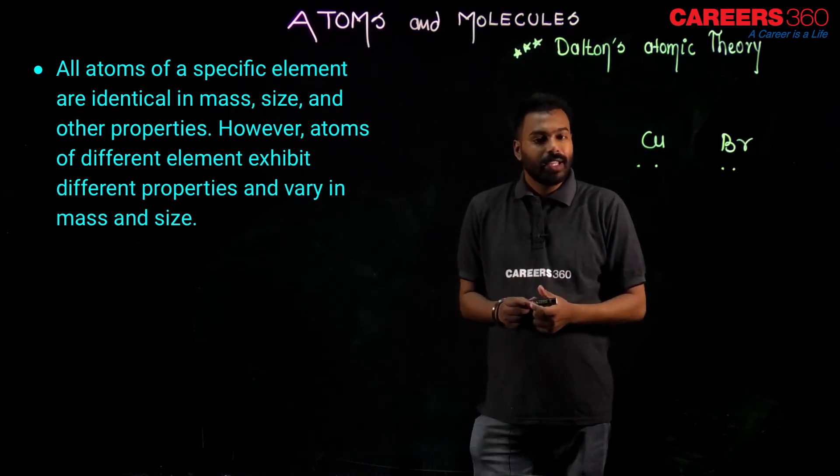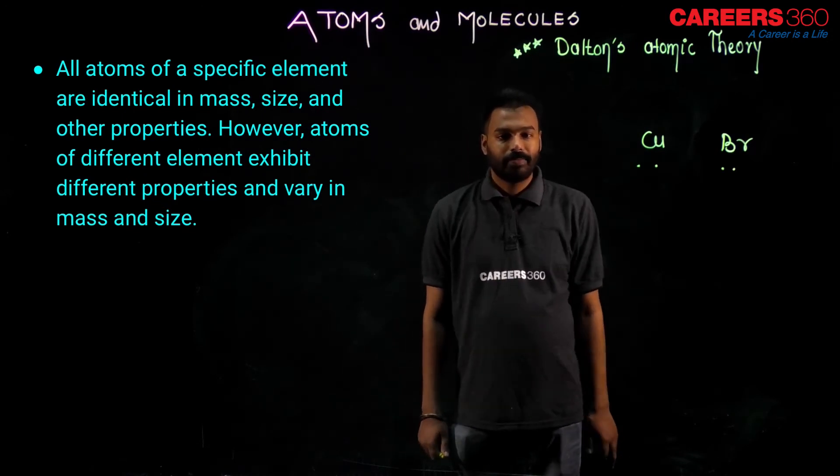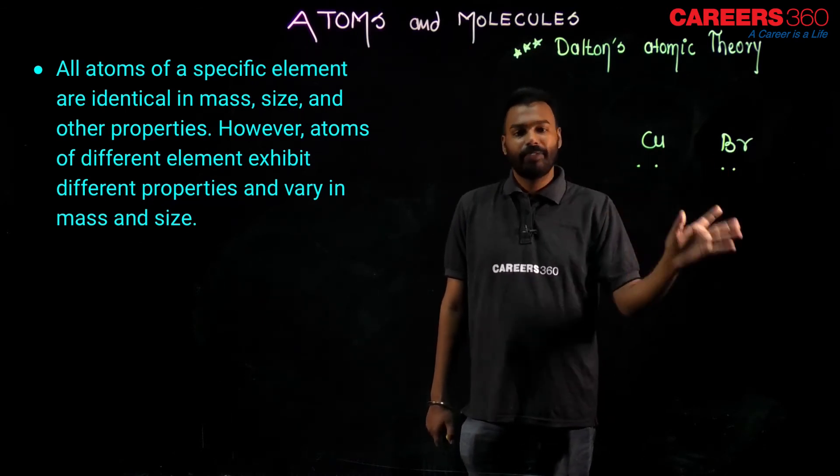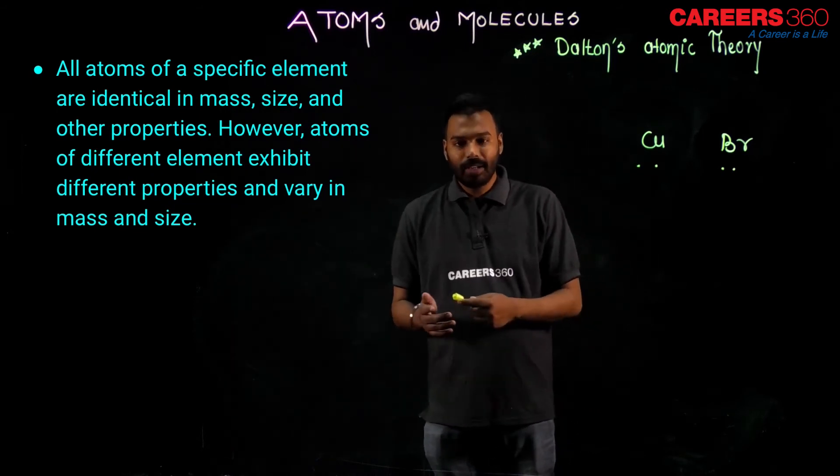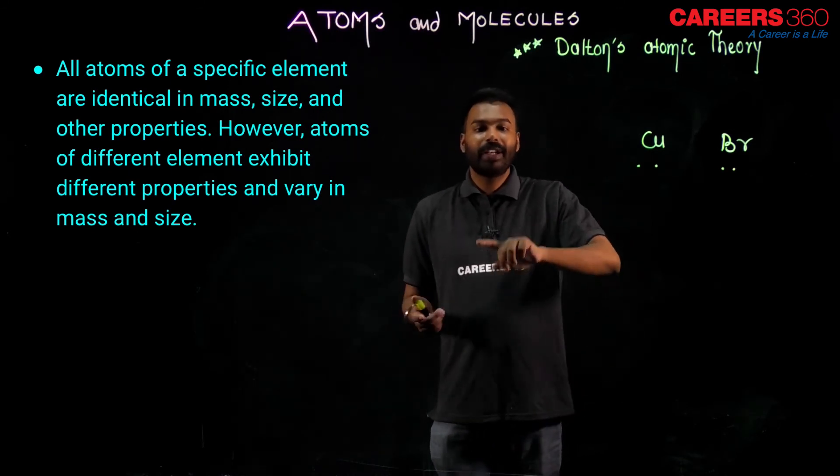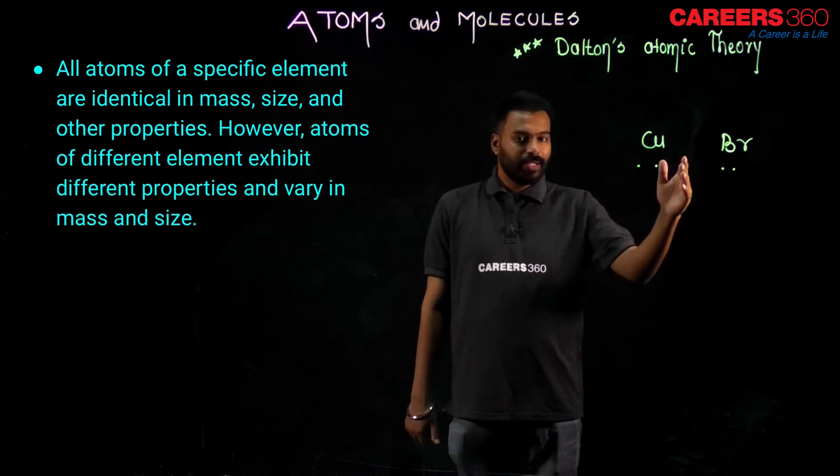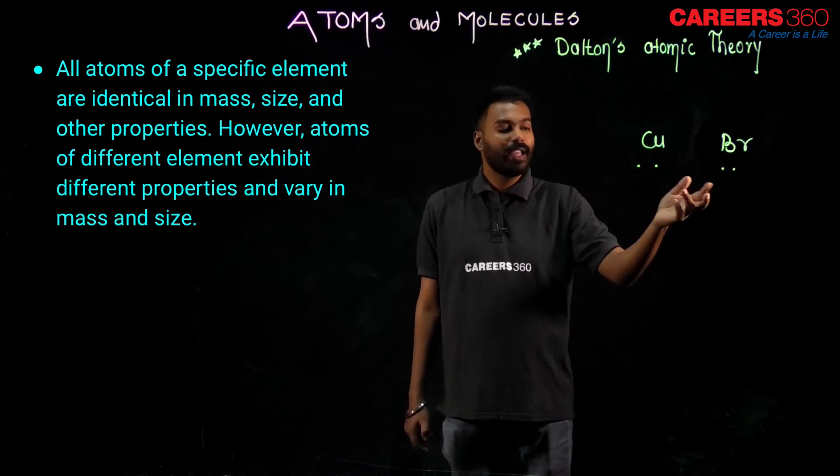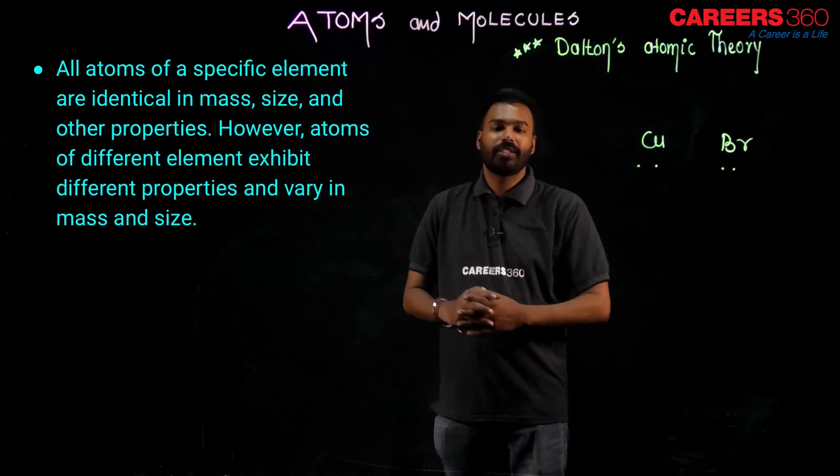Dalton is trying to say that in same element, all the atoms are identical. And if you compare one atom with different other elements' atom, then it will be different. All atoms of a specific element are identical - identical means identical in mass, size and other properties. However, atoms of different elements like bromine or sodium, chlorine, any other - they have different type of atom than the copper. Atoms of two different elements are different and atoms of same element are identical. This is what he is trying to say in this particular point.